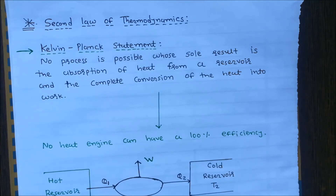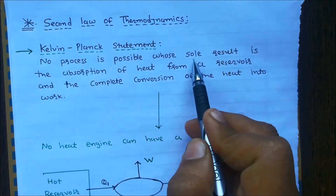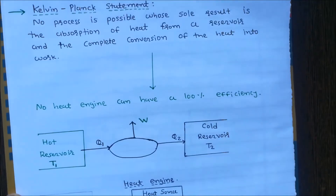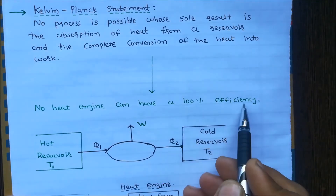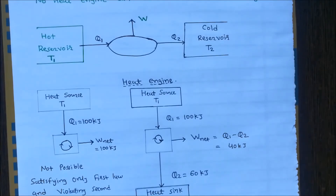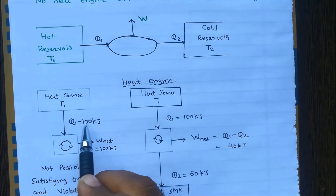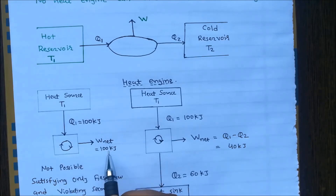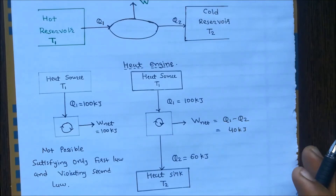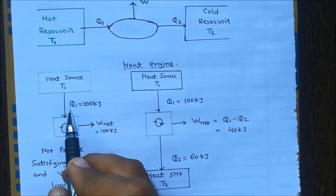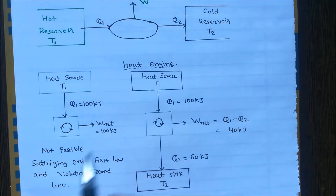What is the second law of thermodynamics? In the second law of thermodynamics there are two statements: the Kelvin-Planck statement and the Clausius statement. The Kelvin-Planck statement states that no process is possible whose sole result is the absorption of heat from a reservoir and the complete conversion of that heat into work. In simple words, no heat engine can have 100% efficiency. For example, if 100 kilojoules is supplied to a cyclic process and work done is also 100 kilojoules, that satisfies only the first law but violates the second law of thermodynamics.